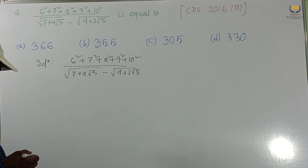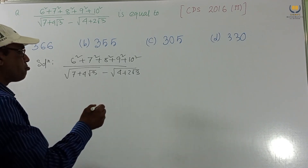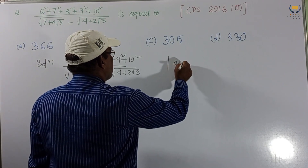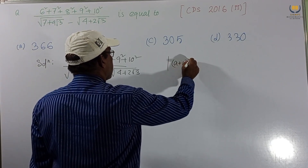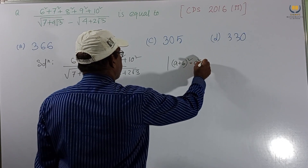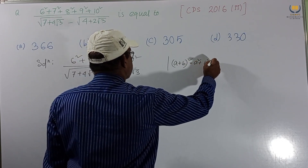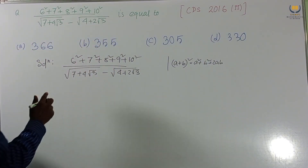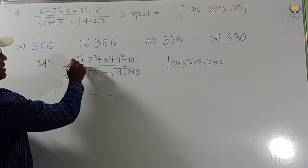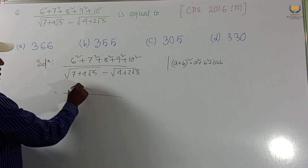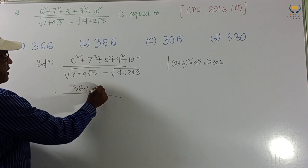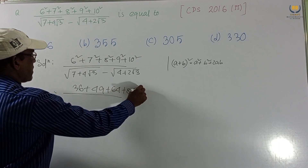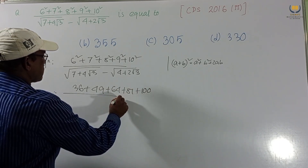When we get this type of problem, we always use the identity (a + b)² = a² + b² + 2ab, or minus as applicable. So in this problem: 6² = 36, 7² = 49, 8² = 64, 9² = 81, 10² = 100.